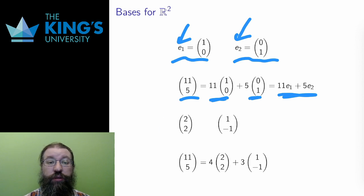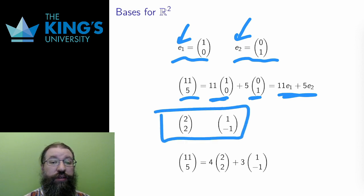The vectors (2,2) and (1,-1) are a basis. I won't prove it here, but as an example, the vector (11,5) can be written as a linear combination. It's equal to 4 times (2,2) plus 3 times (1,-1).